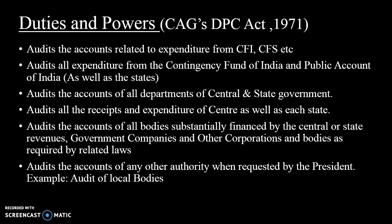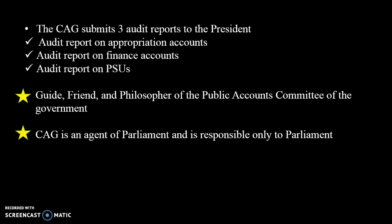The CAG also audits the accounts of all bodies substantially financed by central or state revenue — for example, a body receiving grants from the government. It audits government companies and other corporations as required by related laws, for example the Airport Authority of India, Food Corporation of India, general insurance companies, and Air India. When requested by the President, the CAG also audits other authorities such as local bodies.